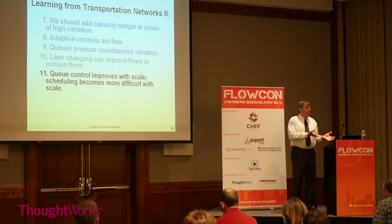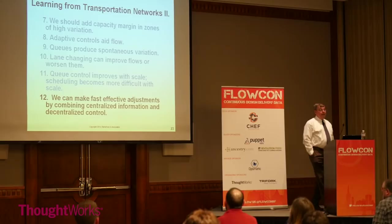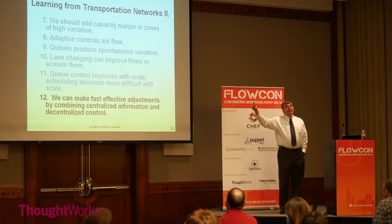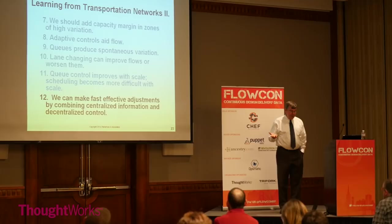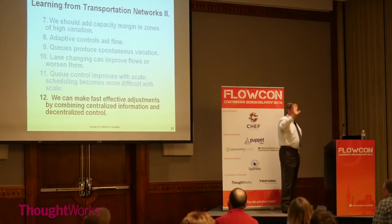We can make fast, effective adjustments by combining decentralized control with centralized information. In Paris on the ring road, they give you information on how long it will take to get to the next exit — truly useful, because you can then decide whether to get off and use surface streets. In the US in some places, we give you distance to the next exit — but distance changes infrequently, so it's not really useful information. Time to the next exit is much more useful. Decentralized actors can act very well in the presence of valid centralized information.